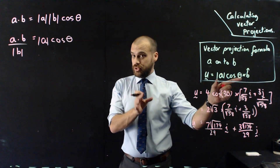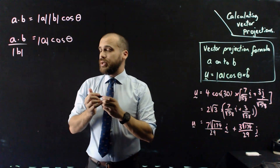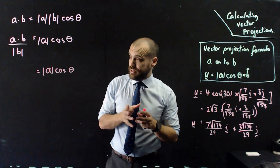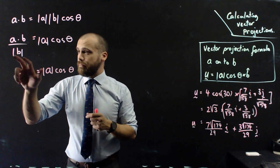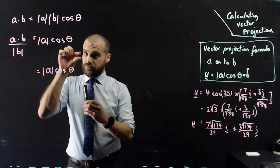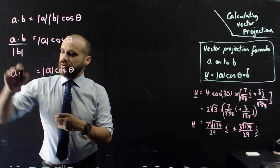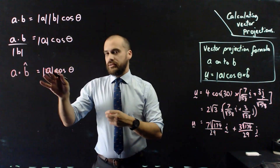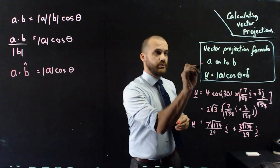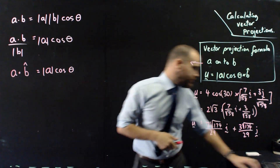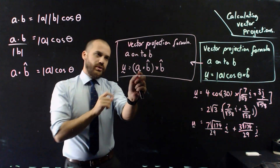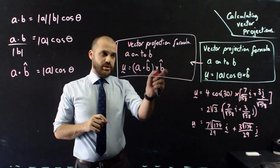I can simplify further: dividing vector B by its magnitude gives the unit vector of B. So the vector projection of A onto B can be rewritten as (A · B̂) × B̂ — that is, A dotted with the unit vector of B, multiplied by the unit vector of B. To use this formula, you need to know how to create a unit vector and how to compute a dot product.